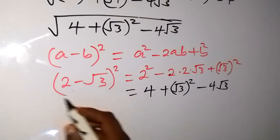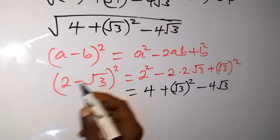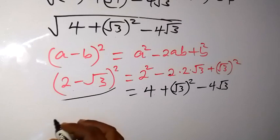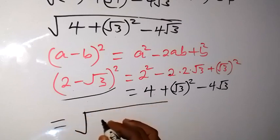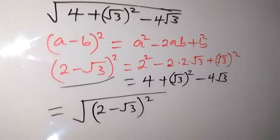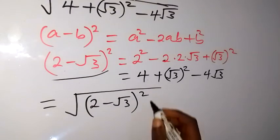So now we can replace what's inside the root with this number here and say we are now going to have equals to root 2 minus root 3, then all squared. So that's what we have left as our simplification.